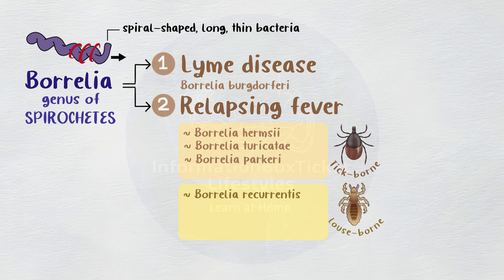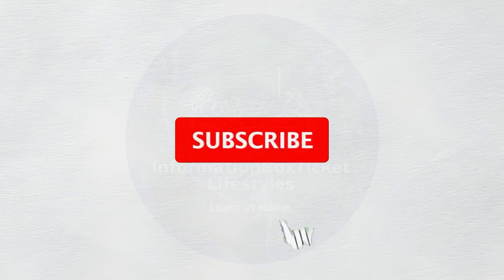As you may already be aware, the word louse is really the singular form of lice, meaning that body lice are the vector that spreads Borrelia recurrentis.